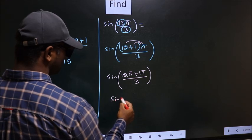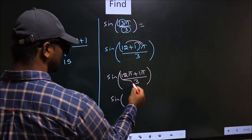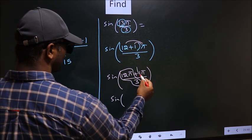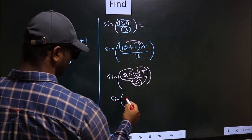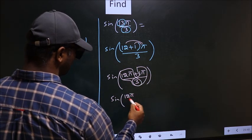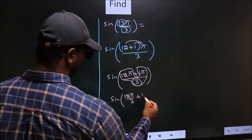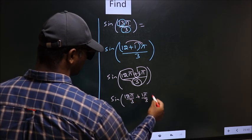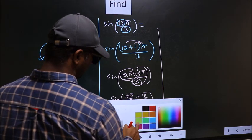You should split the denominator in this way. That is 12π by 3 and 1π by 3.